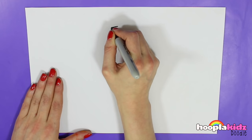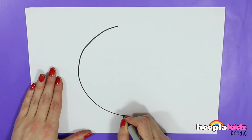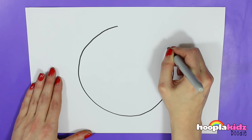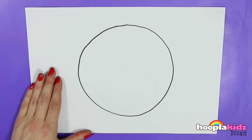Right, so the first thing we're going to do is take our pen and draw a big circle in the middle of the piece of paper. There we go, really take our time with this. I like the look of that.